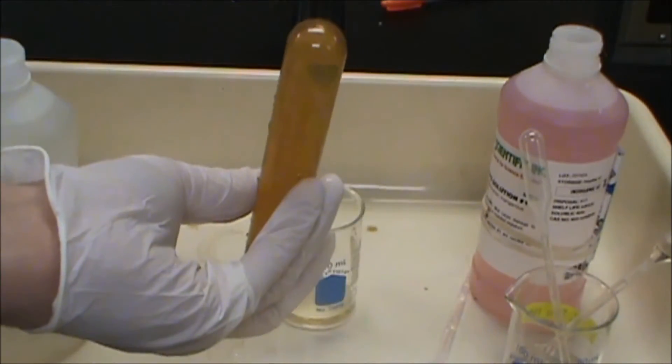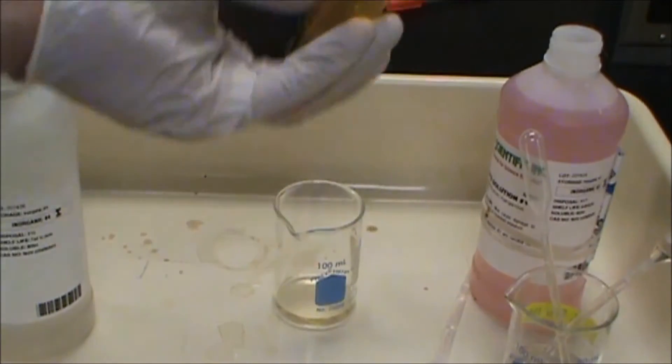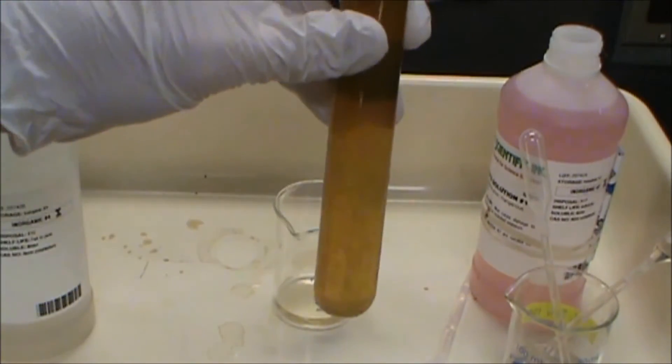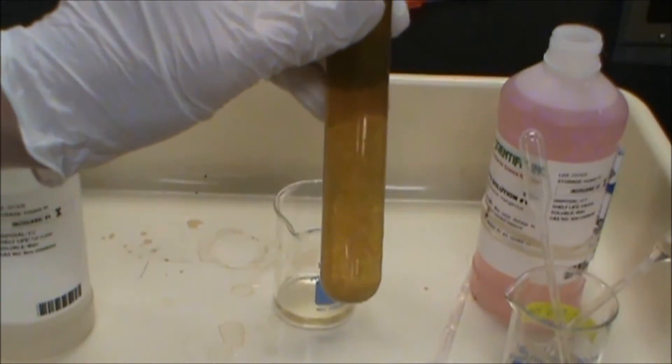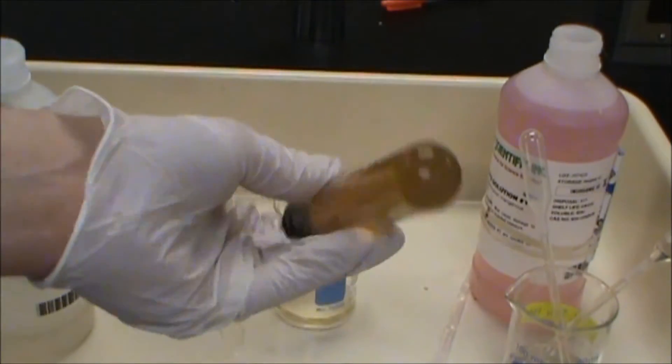And that we are going to later in a second step dissolve in sulfuric acid. And when we do that, we're going to form a triiodide ion that's kind of a yellowish goldish color, and then we're going to do a titration with thiosulfate.